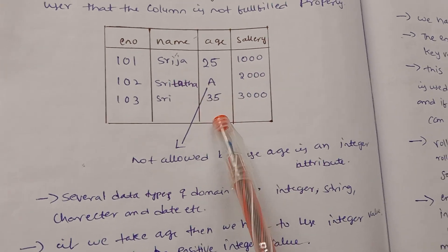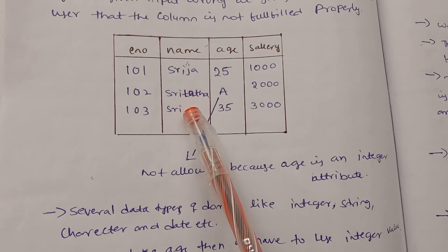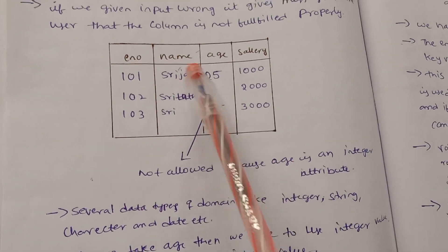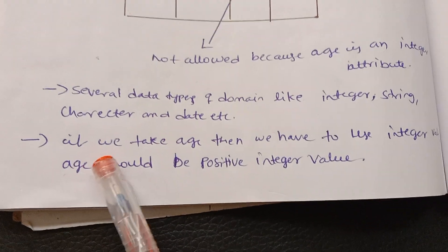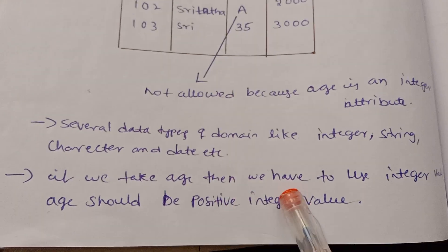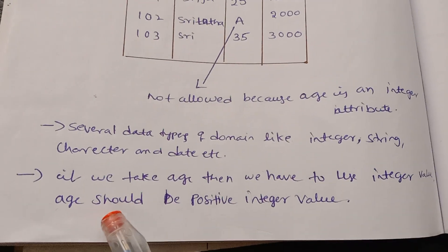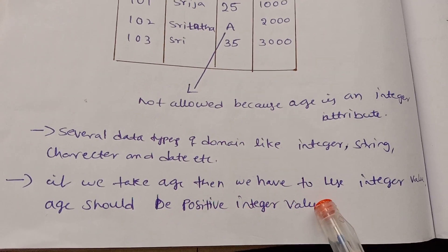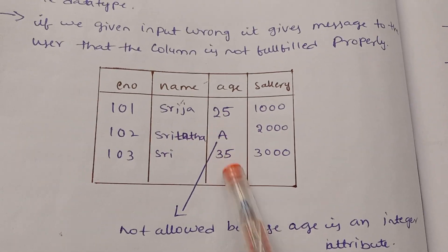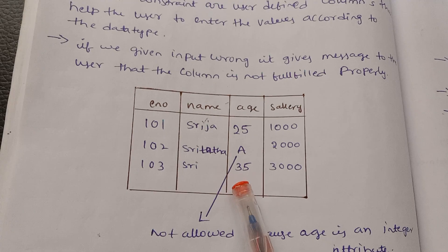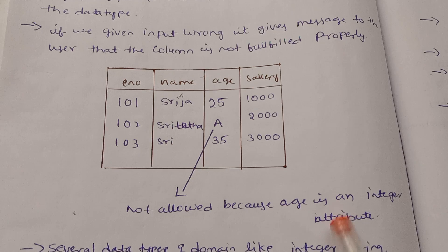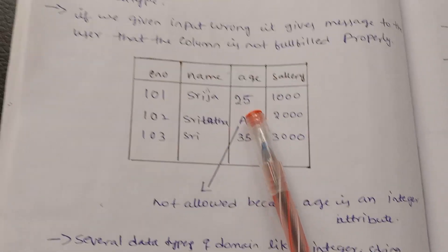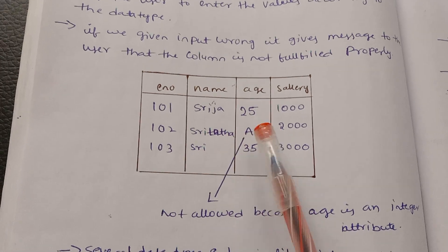Each column has different data types. For example, if we take the age column, we have to use integer values. Age should be a positive integer value. Negative values are not allowed for age, since age is an integer attribute.